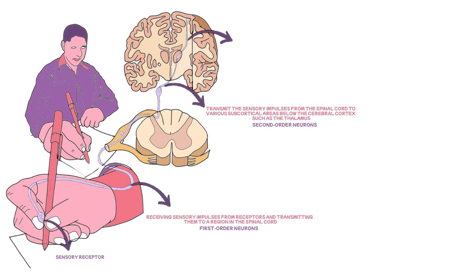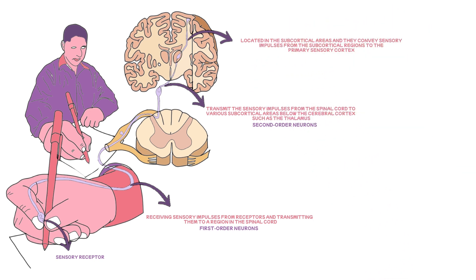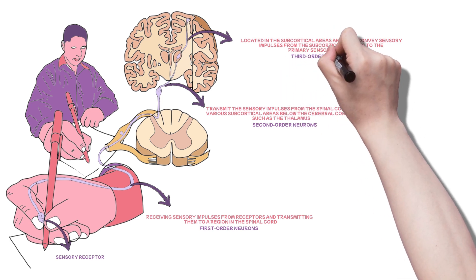Finally, we have the third and final group of neurons, which are located in the subcortical areas and convey sensory impulses from the subcortical regions to the primary sensory cortex. This group of neurons is referred to as third-order neurons.